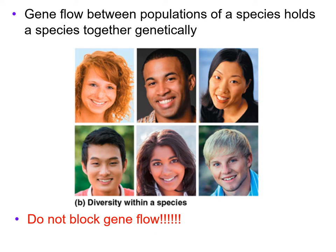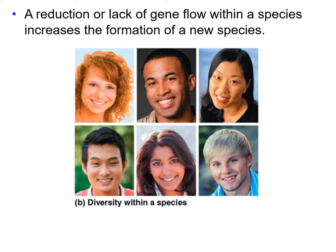Within that biological species, gene flow between populations holds a species together genetically. You don't want to block the gene flow. If you block the gene flow, then you can create the divergence. A reduction or lack of gene flow within a species increases the formation of a new species. That branch in that original picture is the divergence — speciation. So if you can reduce or block gene flow somehow, then you have speciation or divergence.